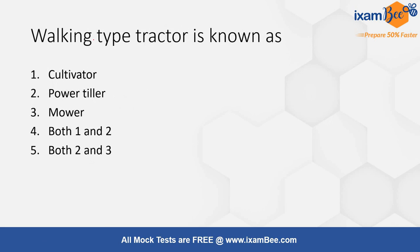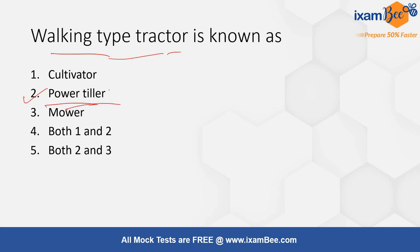The next question is: walking type of tractor is known as — options are cultivator, power tiller, mower, both 1 and 2, or both 2 and 3. The correct answer is option 2, power tiller. Power tiller is actually a walking type of tractor.